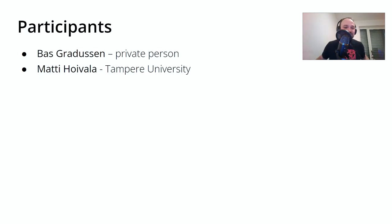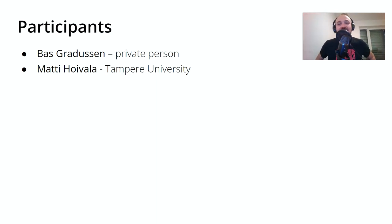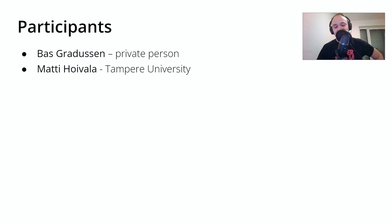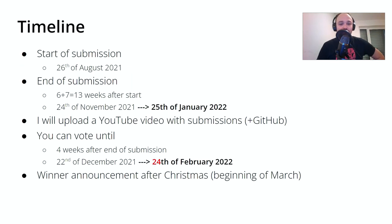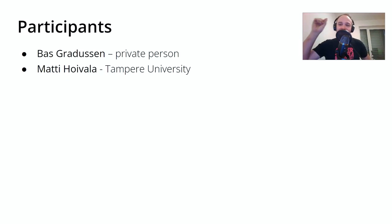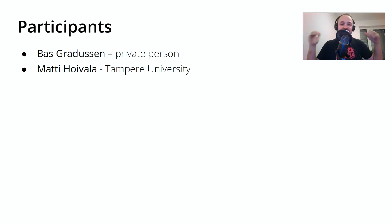The names are Bas Gradnussen and Matti Hojvala. Bas didn't give any affiliation, so I assume he wants to participate as a private person — he is from the Netherlands. Matti Hojvala is from Tampere University. You have four weeks from now until the 24th of February to vote. Enter the name of your preferred participant — either Bas or Matti — and if you find the name already, just click like.